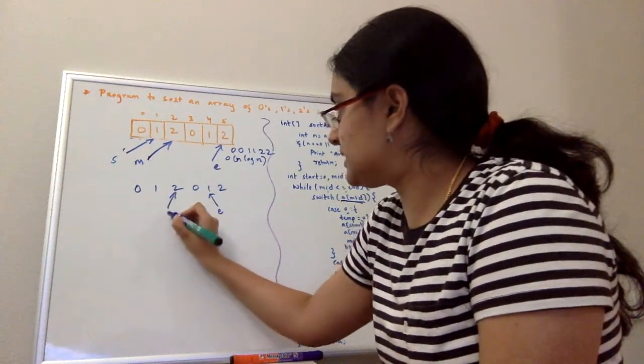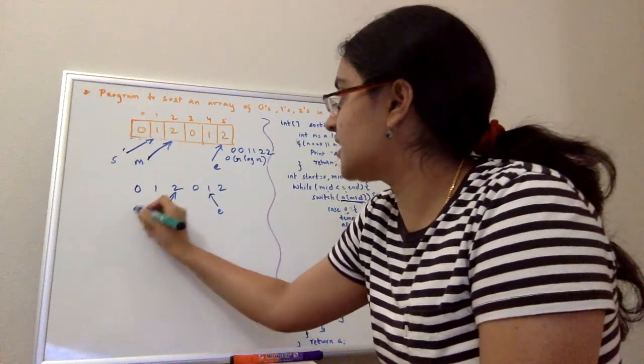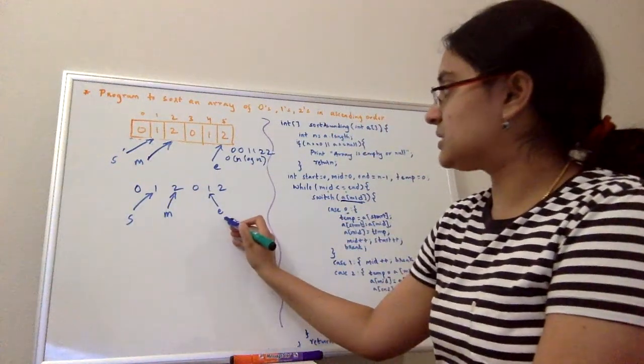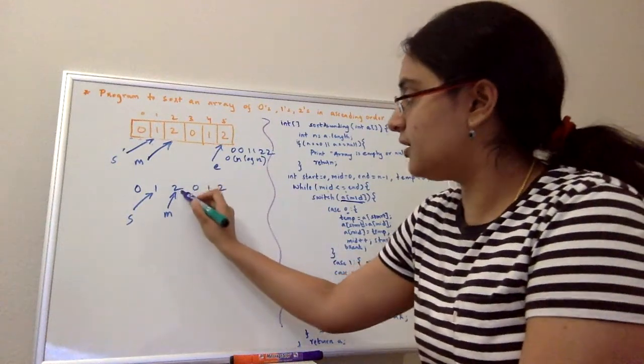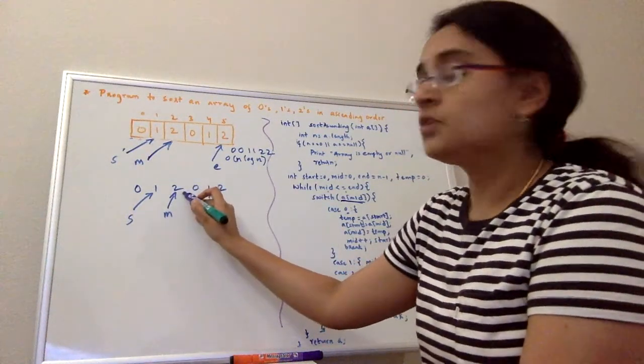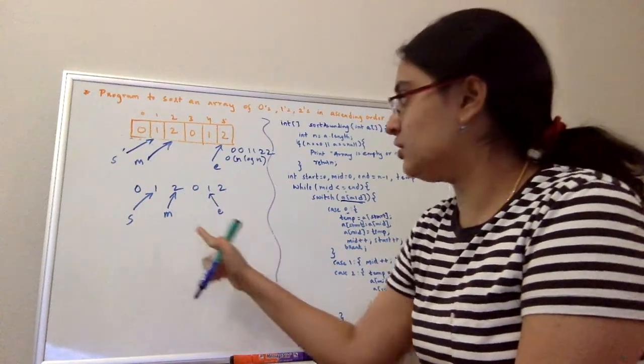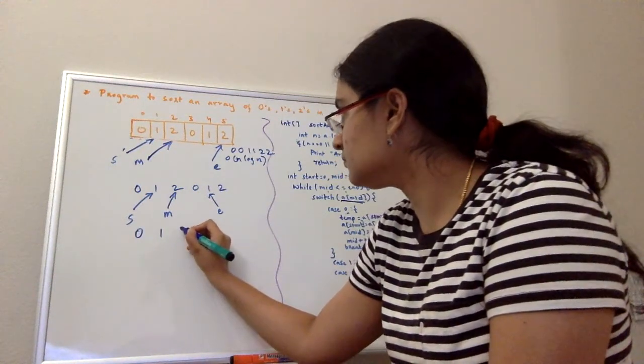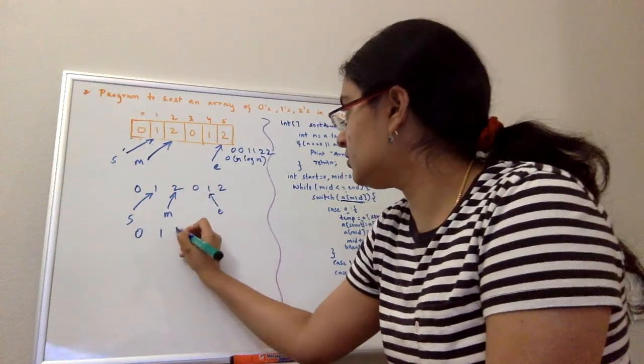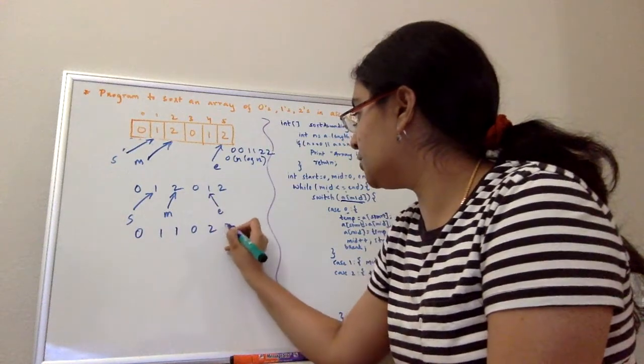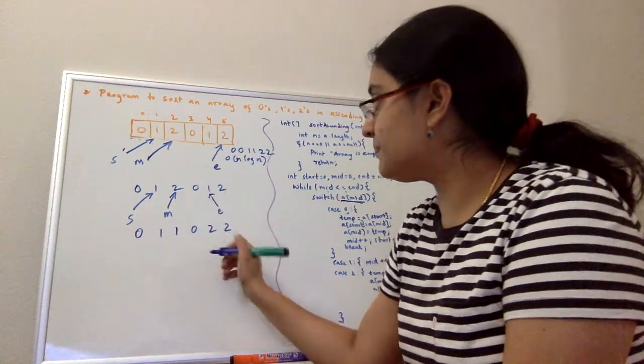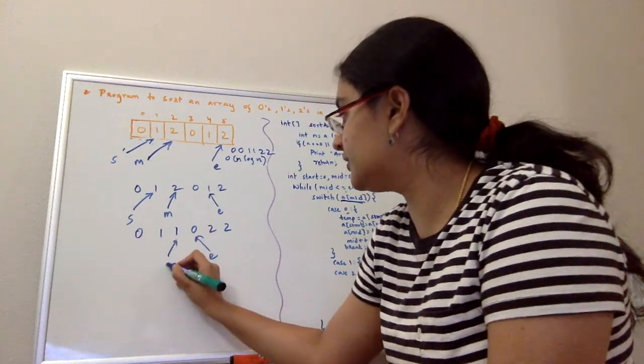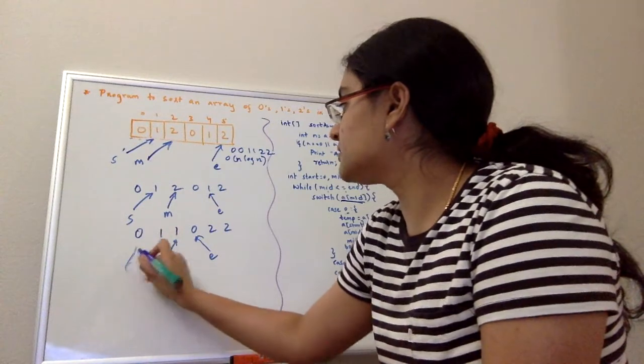Now mid is still less than end, so I'll go ahead and check what is mid. Now mid again is two. So when it is two again, I'll swap mid and end. So our new end is this. Our new array will be zero, one, one comes here, zero, and two comes here, two and two. When a swapping happens, end pointer is decremented, and your mid is still here, and your starting is still here.